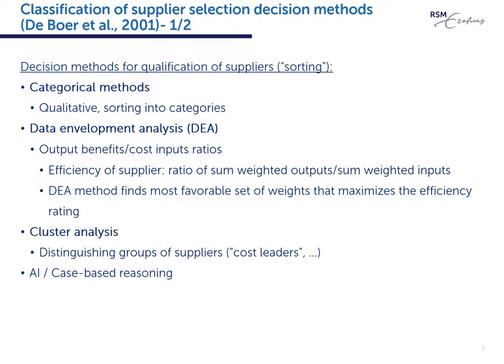Finally, AI methods, which are quite new, use information and experience from similar previous decision situations, and the algorithms are adapted over time. It is important you understand the main differences between the first three types. Note that in practice the simple categorical methods are still the most popular. So far we have been discussing only methods for qualification of suppliers, not final choice.